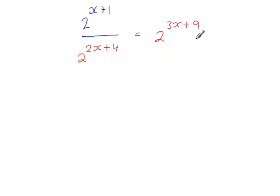So the equation now becomes this, and we have a base of 2 throughout. I'm going to simplify the left-hand side because we're dividing. The bases are the same, so we can subtract the indices.